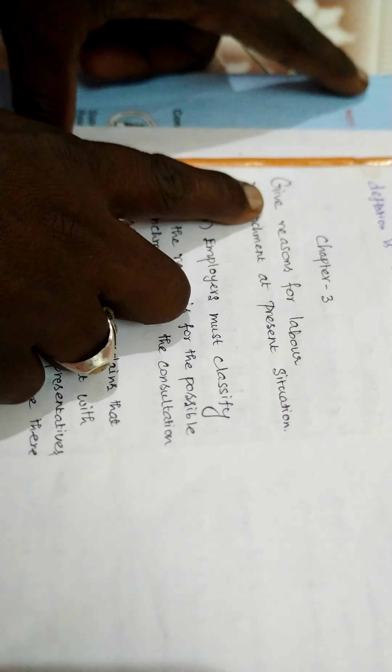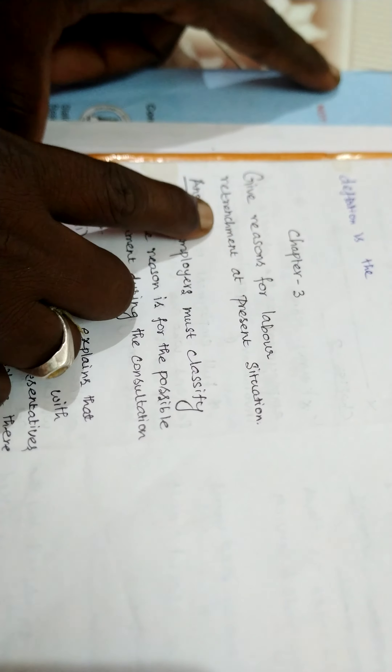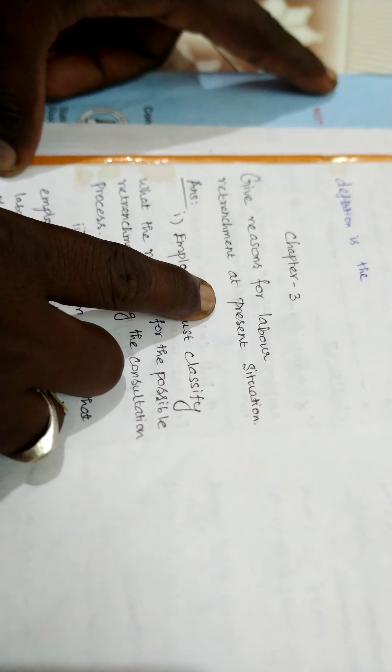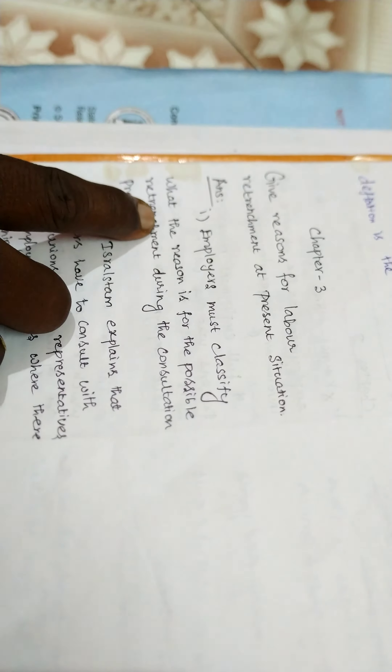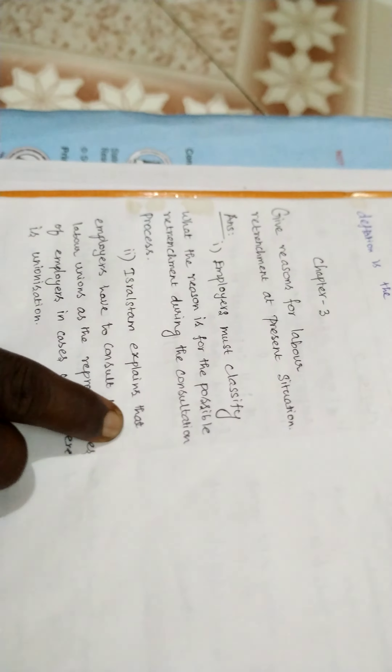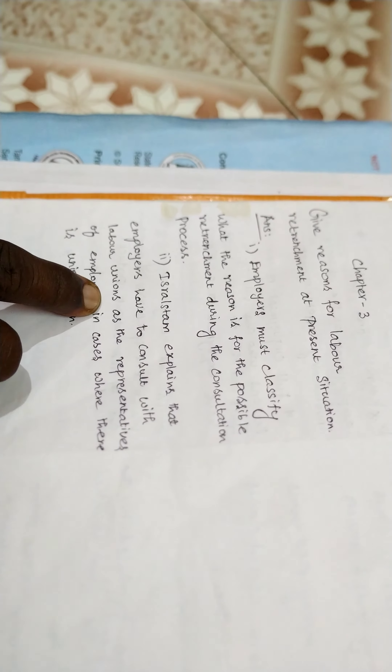Question 4: Give reasons for labor retrenchment in the present situation. Employers must clarify the reason for possible retrenchment during the consultation process. Employers have to consult with labor unions as the representatives of employees in cases where they are in a union session.